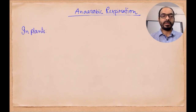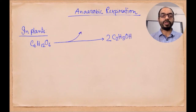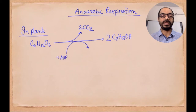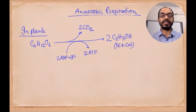In the absence of oxygen, from one molecule of glucose it produces different types of biochemical substances. In plants, from one molecule of glucose it produces two molecules of ethanol or ethyl alcohol, two molecules of carbon dioxide as a by-product, and two molecules of ATP with the help of two molecules of inorganic phosphate.